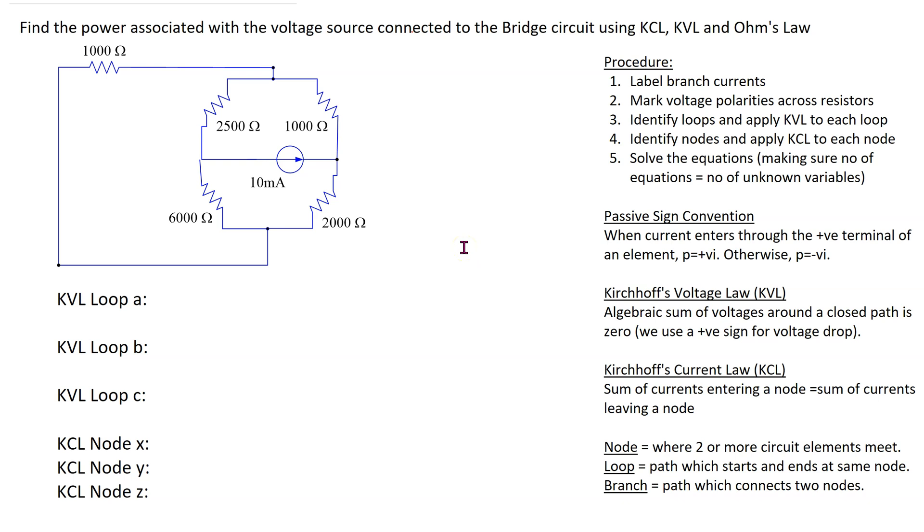In this case we can label the branch current here as I1, we can label the branch current here I2, the branch current here as I3, this branch current as I4 and this branch current as I5.